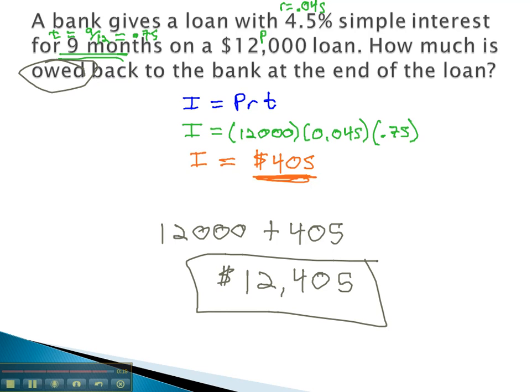And that's how we can calculate simple interest using the equation principal times rate times time. Again, it's very important. The rate is a decimal and the time is in years.